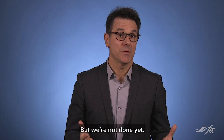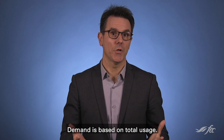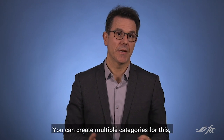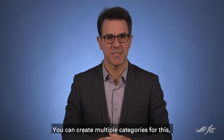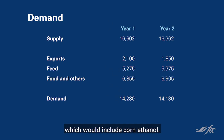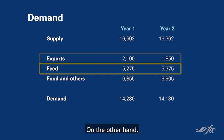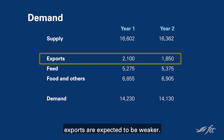We still need to investigate the demand side of the market. Demand is based on total usage. You can create multiple categories for this, but we'll simply look at exports, feed, and food and other usage, which would include corn ethanol. In this example, feed usage is expected to grow from year 1 to year 2. On the other hand, exports are expected to be weaker.